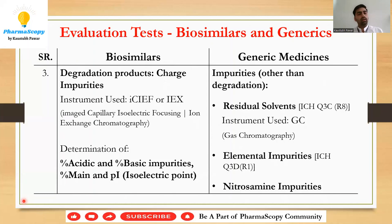In generic medicines, there are various other impurities beyond degradation products. One is residual solvents — for example, when making a tablet by non-aqueous granulation using IPA or acetone, we must measure how much IPA or acetone remains after formulation. This is done using GC (gas chromatography), and details are available in the ICH Q3C guideline.